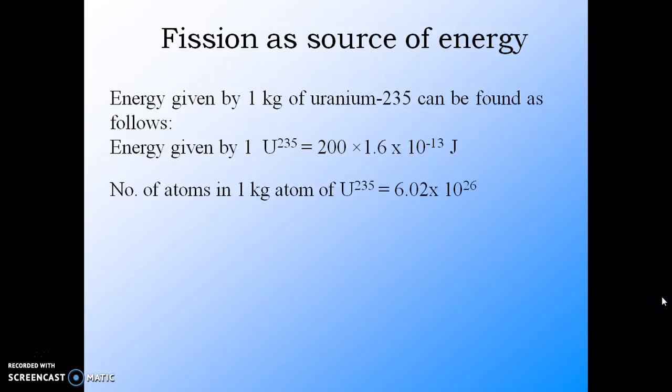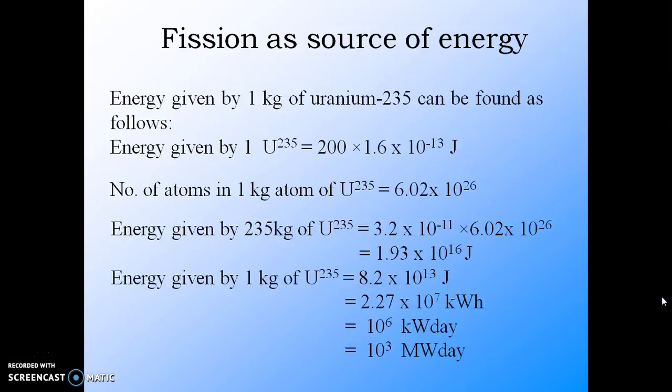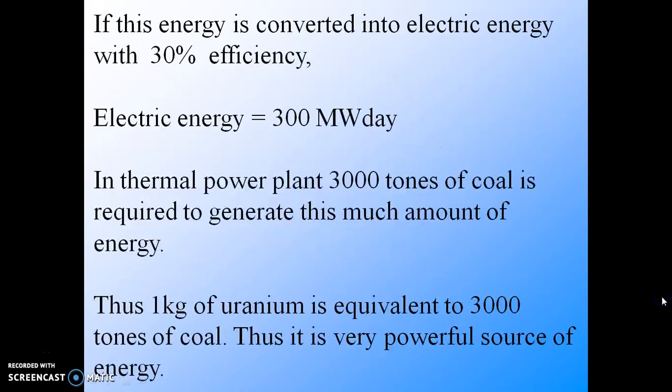The number of atoms present in one kilogram-atom, that is 235 kg of uranium, is Avogadro's number. This is the energy given by 235 kg of uranium: 1.93 × 10^16 joules. So energy given by 1 kg of uranium is 8.2 × 10^13 joules, which comes out to be 1023 megawatt days. If we convert this energy to electric energy with 30% efficiency, we get 300 megawatt days. In a thermal power plant, 3000 tons of coal is required to generate this amount of energy. So we may say that 1 kg of uranium is equivalent to 3000 tons of coal, and now we can conclude it is a very powerful source of energy.